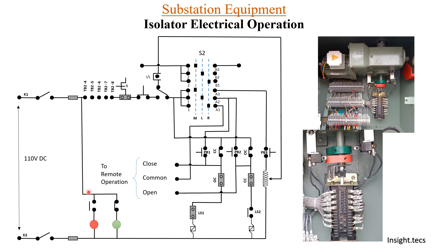Another provision is the two LEDs for open and close operation. The red LED indicates the isolator is closed (on) and the green LED indicates the isolator is open. Two contacts from the OC and CC relays are provided here for this indication.